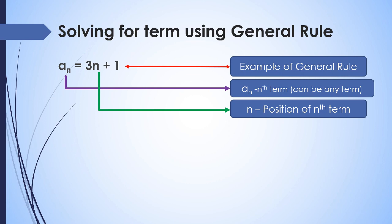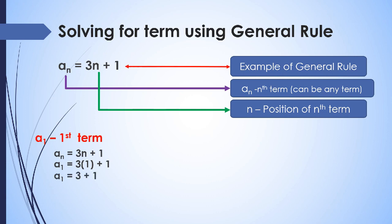To solve for a sub 1, the first term, we use the general rule a sub n equals 3n plus 1. We replace a sub n with a sub 1, and replace n with 1. So a sub 1 equals 3 times 1 plus 1, which gives a sub 1 equals 3 plus 1, so a sub 1 equals 4. The first term of the sequence is 4.